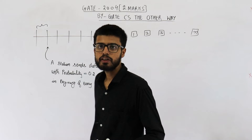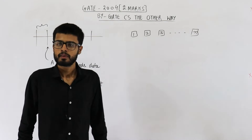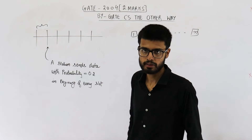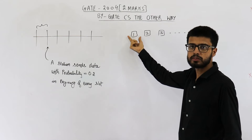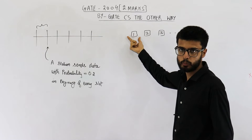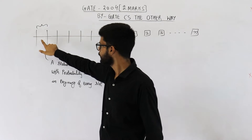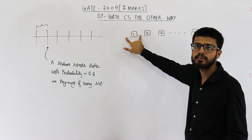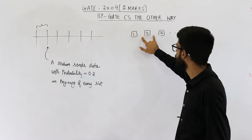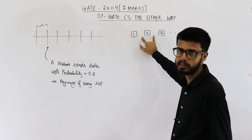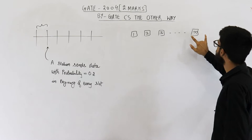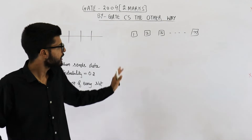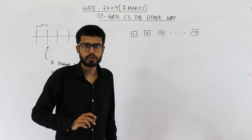Each and every host has data to send always, so in each and every slot, each and every host is trying to send data. Any host can send data with the probability of 0.2. If we analyze only the first slot: station one can send with probability 0.2, station two can also send with probability 0.2, and so on. If more than one station sends data at the same time, there will be a collision.